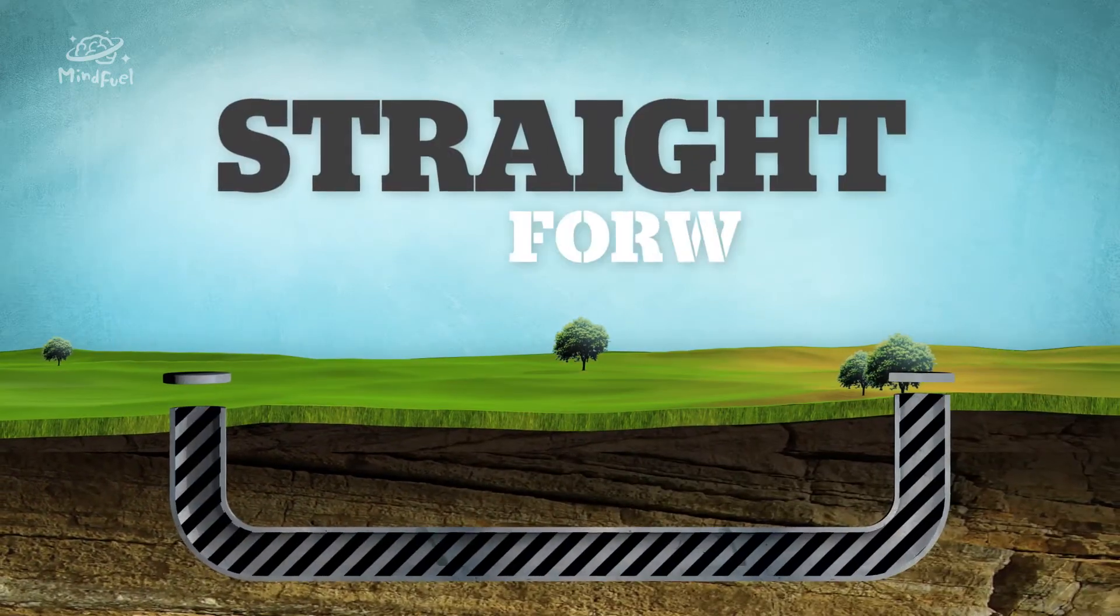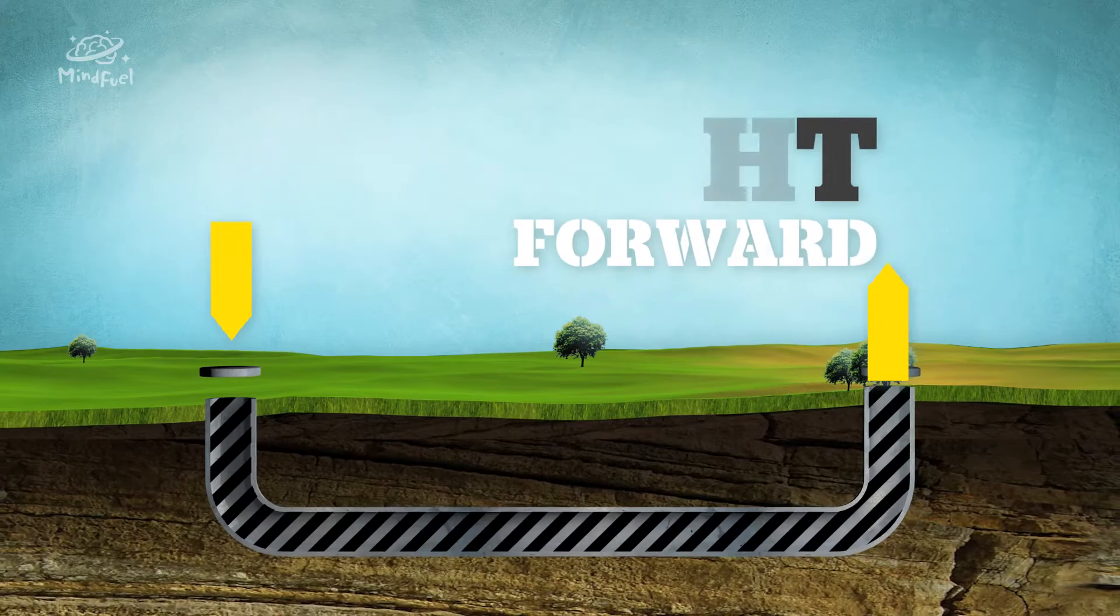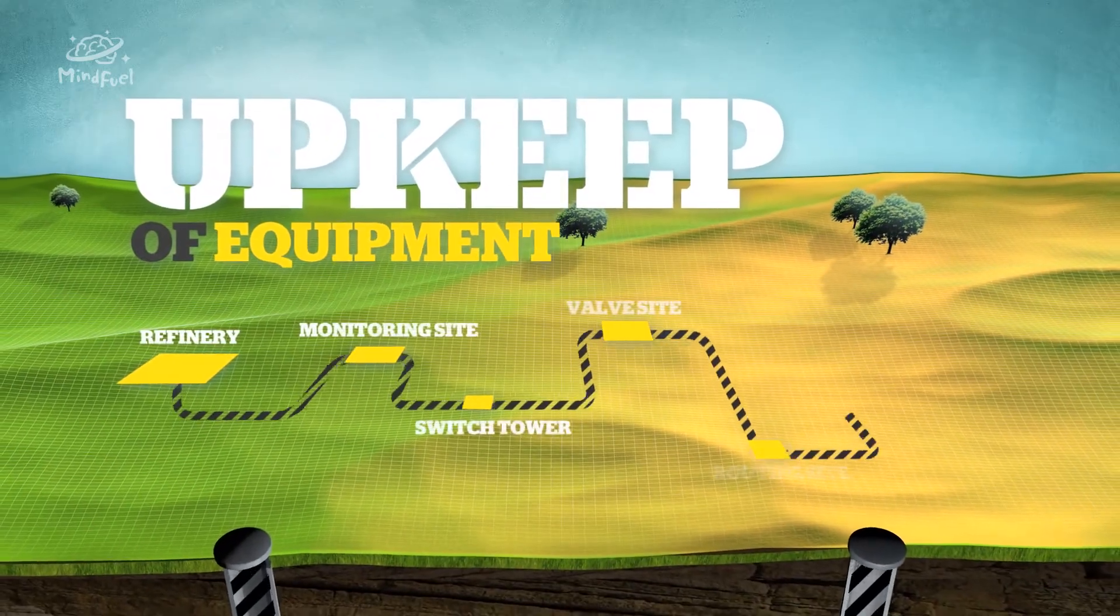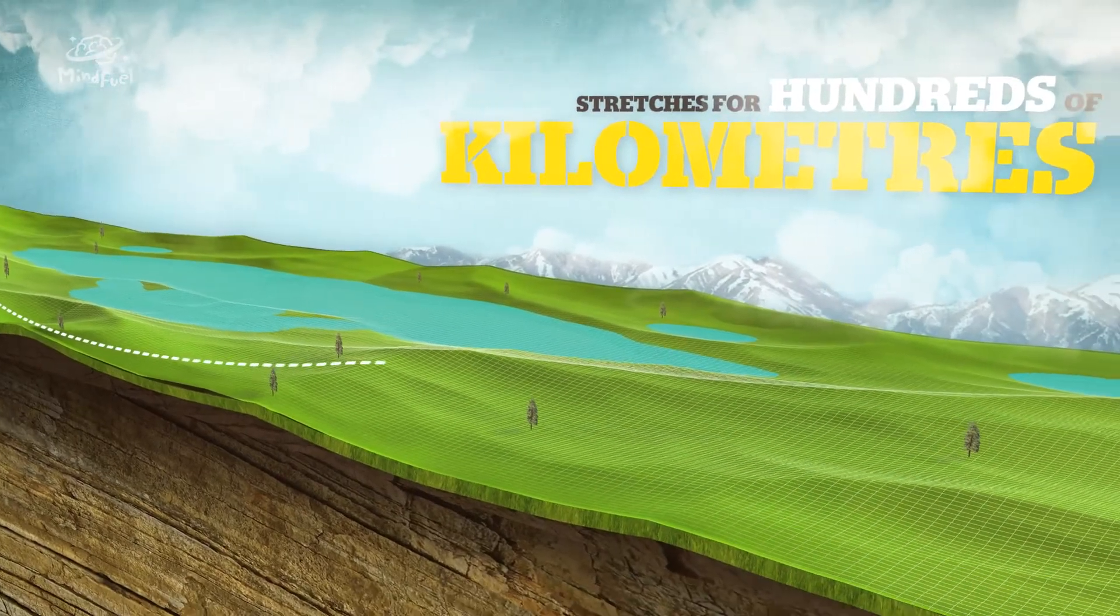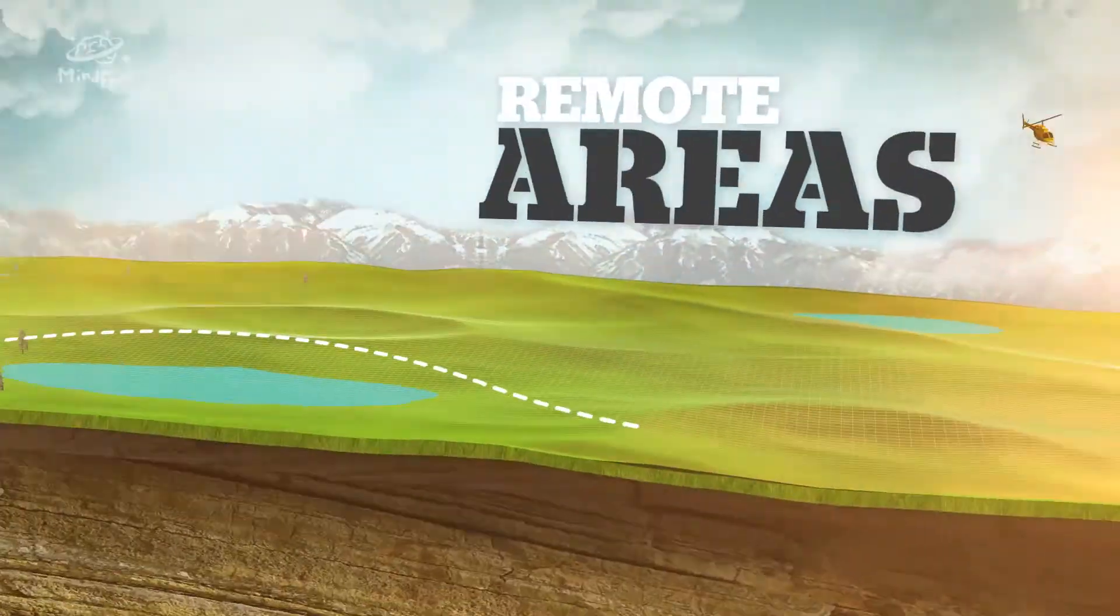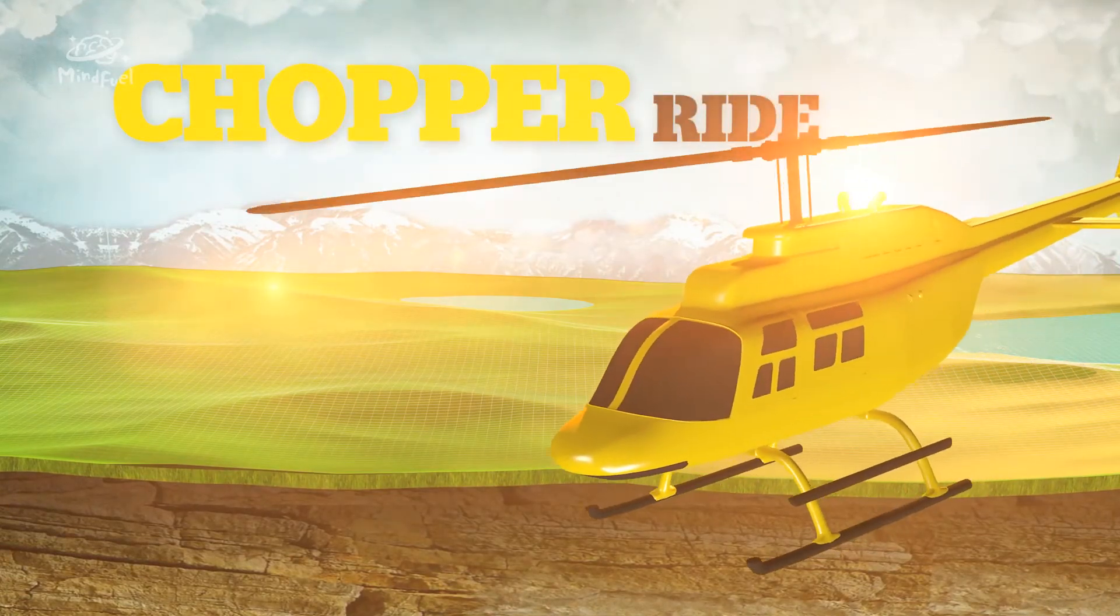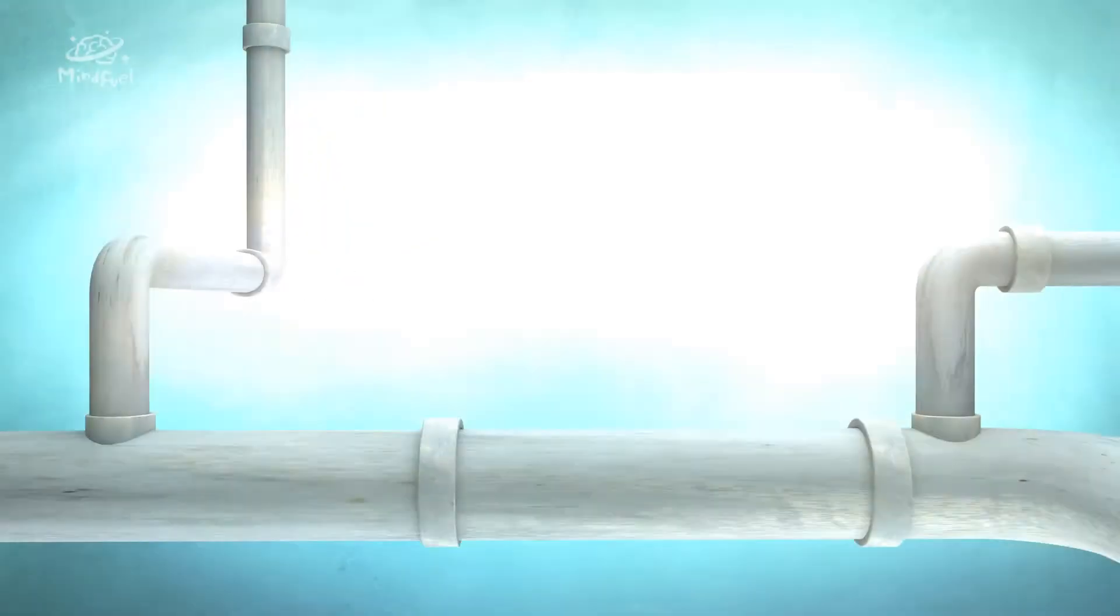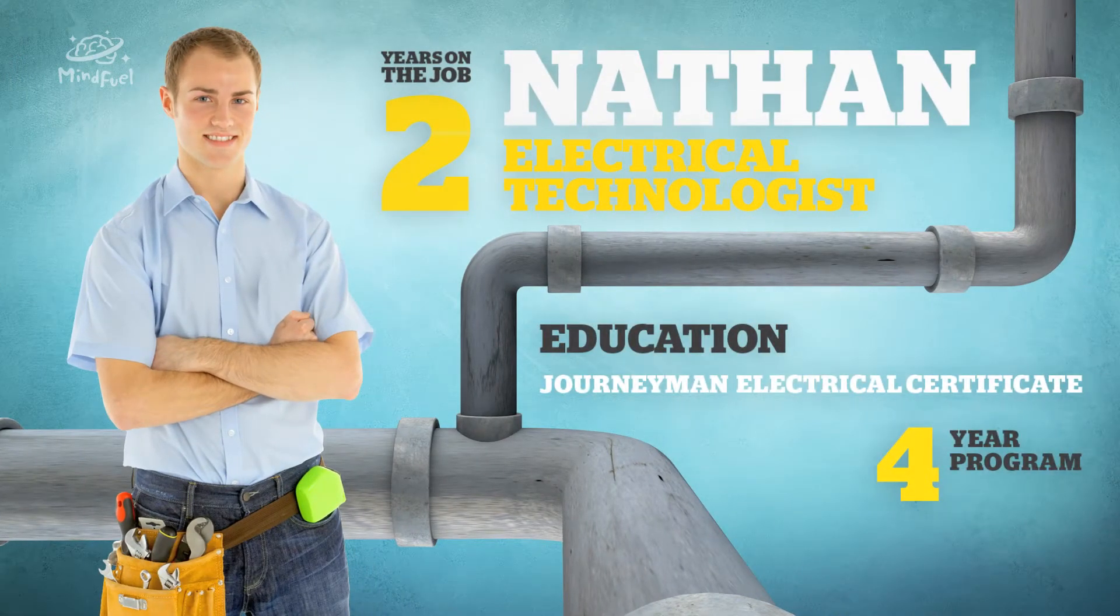A pipeline might seem straightforward. Pump fluid in one end and retrieve it at the other. But there's a lot of equipment in between that needs upkeep. The line that my team is responsible for stretches for several hundred kilometers across a lot of remote areas. So today, we're going for a chopper ride. Hey, I'm Nathan. I'm an electrical technologist.